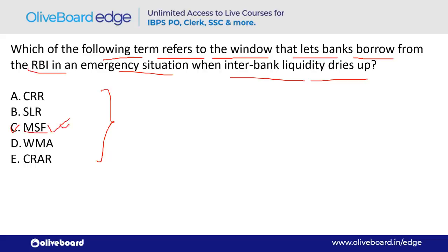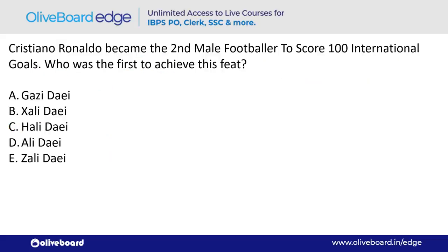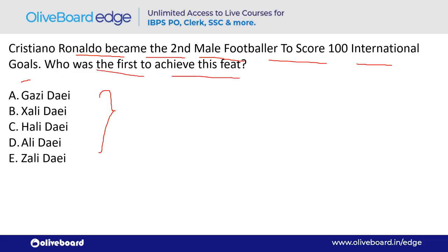Cristiano Ronaldo became the second male footballer to score 100 international goals. Who was the first to achieve this feat? The answer is Ali Daei — option D. He achieved 109 goals; remember to keep 109 goals in mind.